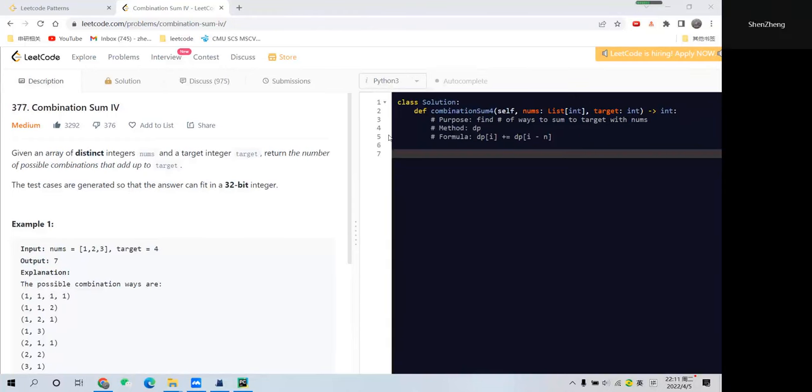Hi everyone, today I saw a LeetCode question called Combination Sum Form. In this question, I'm given an array of distinct integer numbers and a target integer, and we want to return the number of possible combinations that add up to the target.